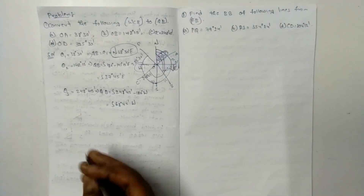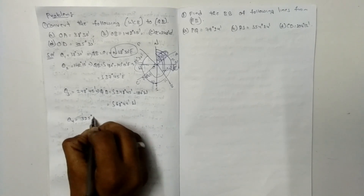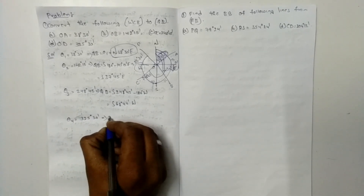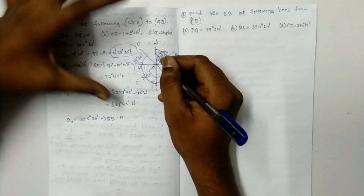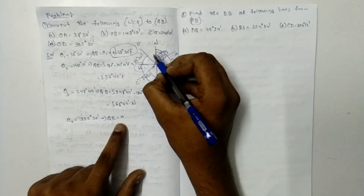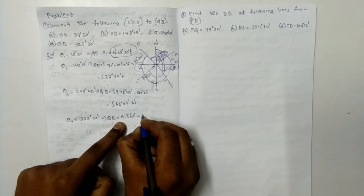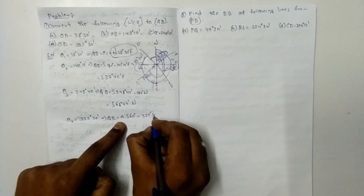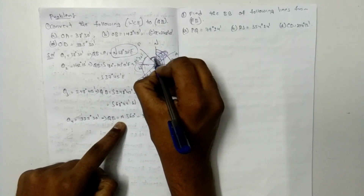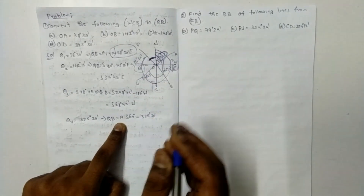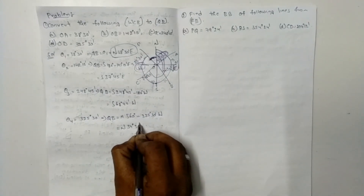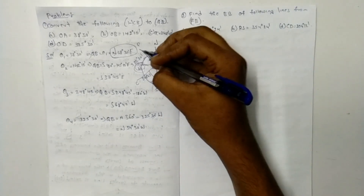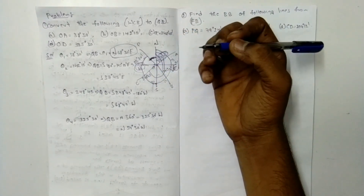The quadrantal bearing of OC line is South 68°45' West. For OD = 325 degrees 30 minutes, it is in the fourth quadrant. We calculate: 360 minus 325°30' = North 34°30' West. The quadrantal bearing of OD line is North 34°30' West.